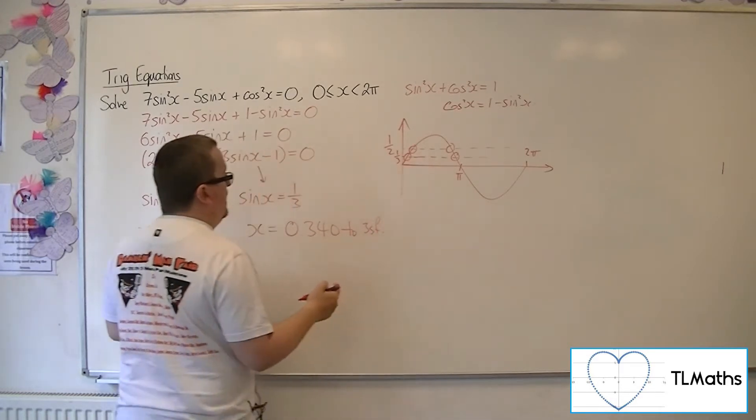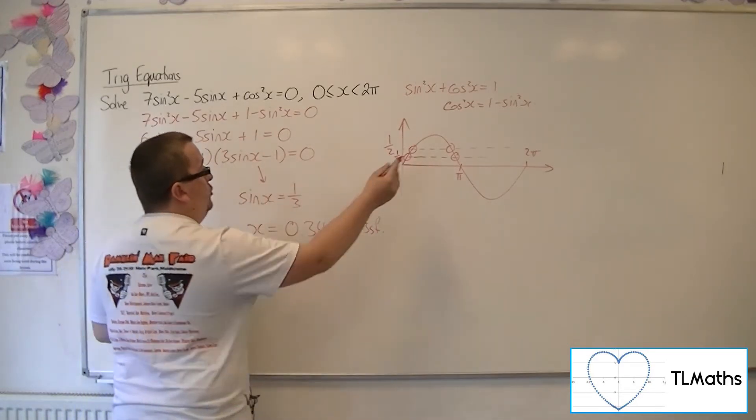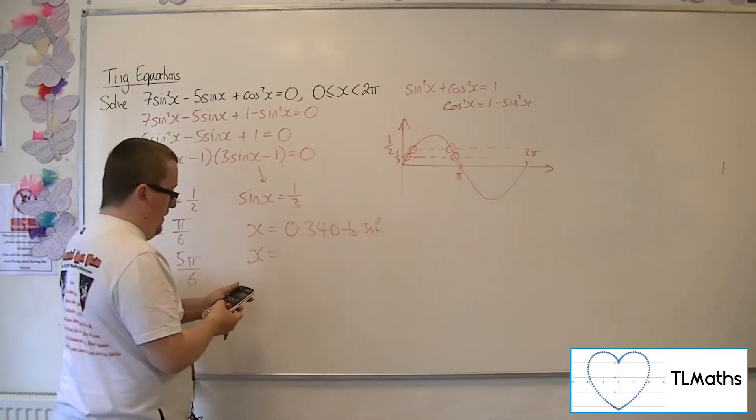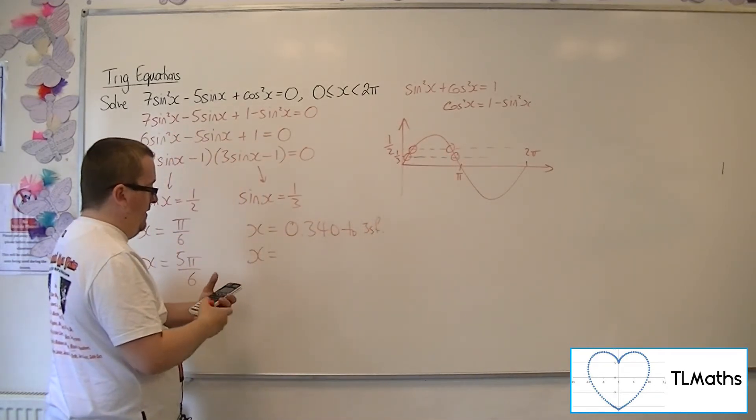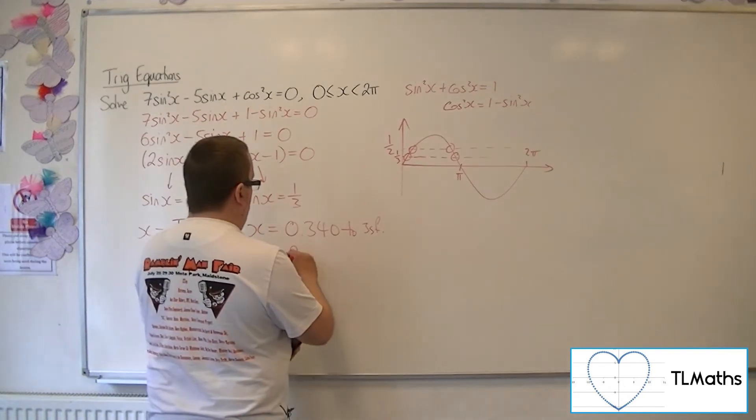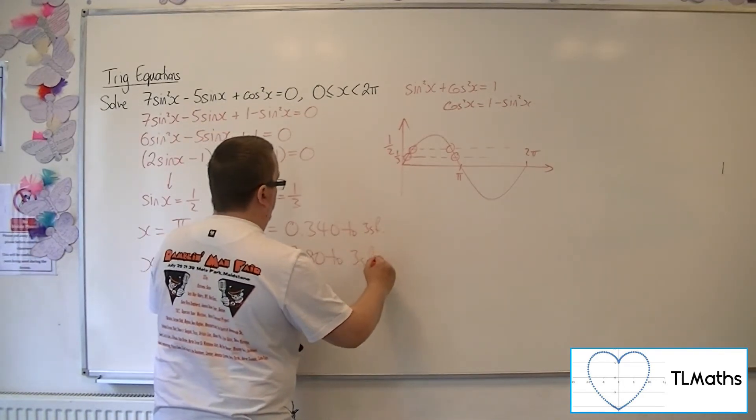The second solution is 0.340 away from π. So π minus 0.340 is 2.80 to 3 significant figures.